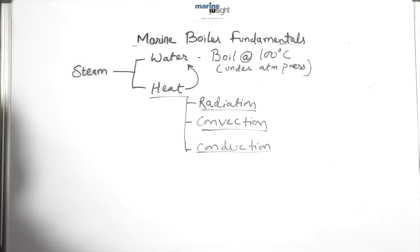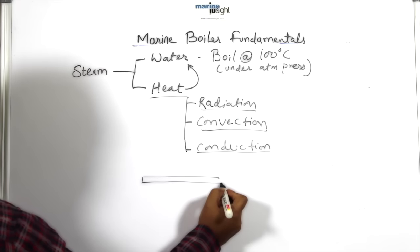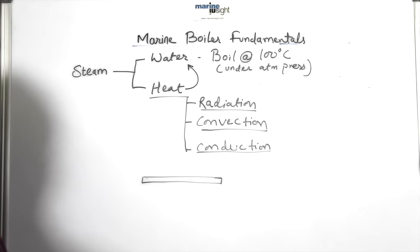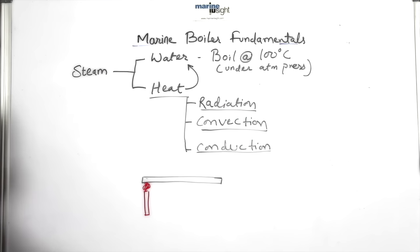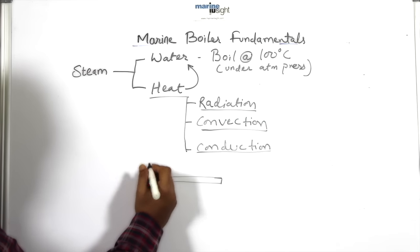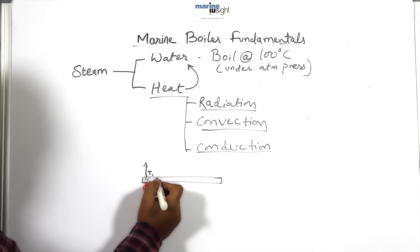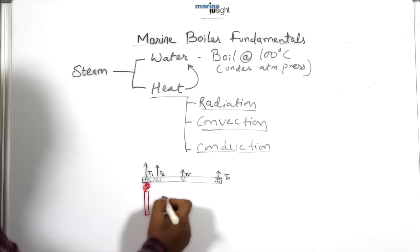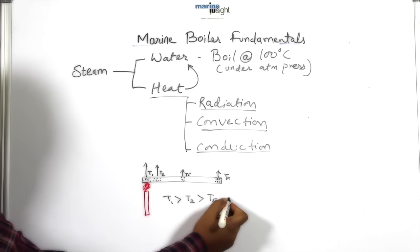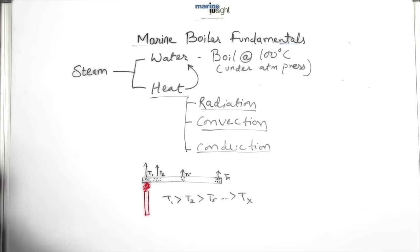Conduction: In this method, heat is transferred between two components only when there is physical contact between them. Take a metallic rod and heat it at one end. The molecules of the metallic rod at this end will start vibrating due to increase in temperature and transfer the heat to adjacent molecules. These adjacent molecules will now start vibrating and transfer the heat energy to further adjacent molecules. This process continues until the heat reaches the other end.